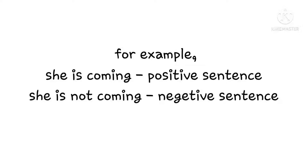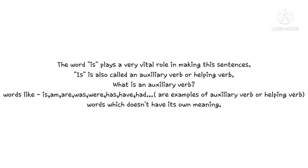See, children, 'not' is coming in between 'is', that is the auxiliary verb, and the main verb, that is 'coming'. So, 'is' is an auxiliary verb or helping verb, and this word plays a very vital role in making negative sentences.